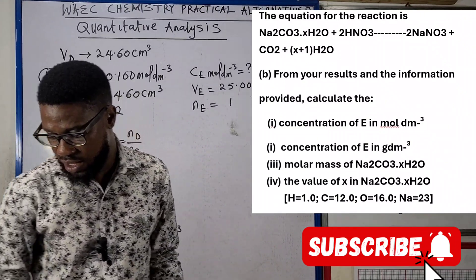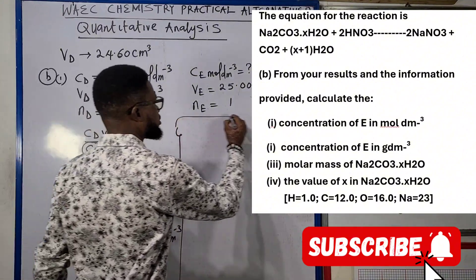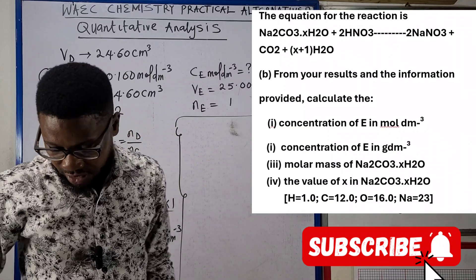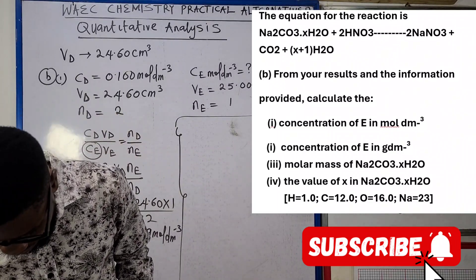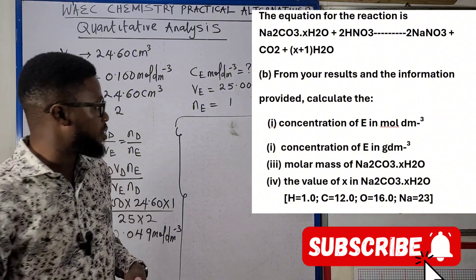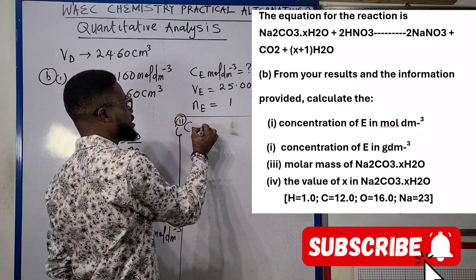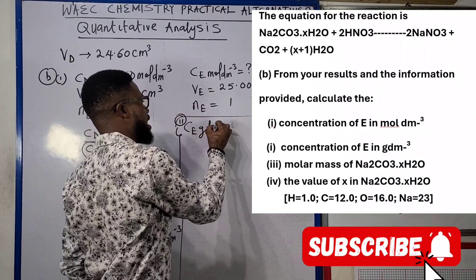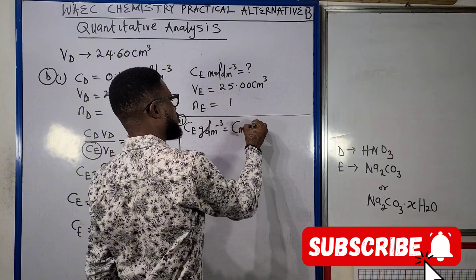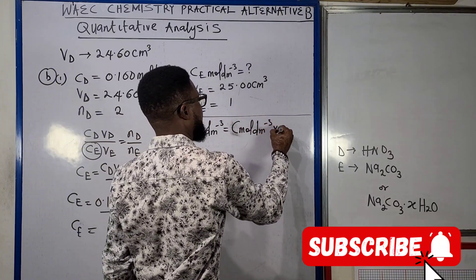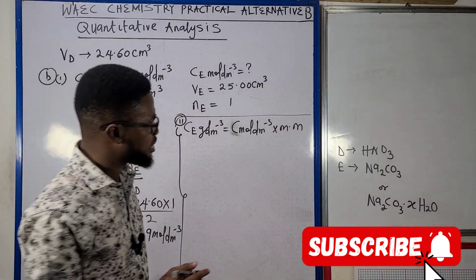We move to the next question. It says we should look for the concentration of E in gram per dm³. Now concentration of E in gram per dm³ is actually concentration in mole per dm³ times molar mass.